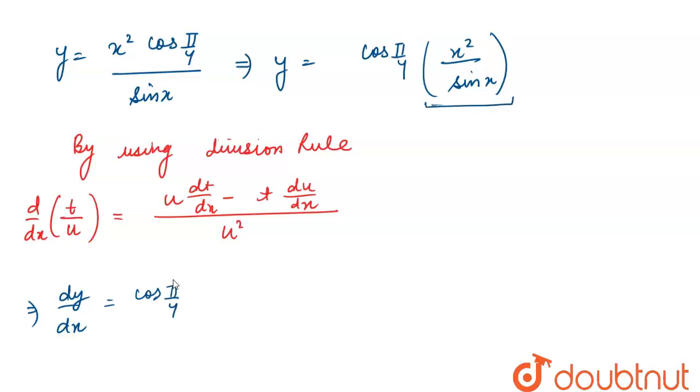Division rule and quotient rule both are same. And here in denominator we will have sin(x) whole square, or we can say sin²(x). Now sin(x) as it is.